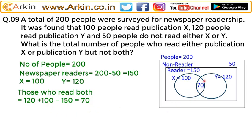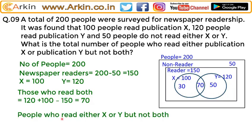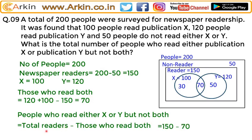The question asks for the total number of people who read either publication X or publication Y but not both. From the total readers of 150, we deduct those reading both newspapers to get the number reading only one newspaper. That will be 150 minus 70 = 80. You can also verify: 30 plus 50 = 80. So 80 is the correct answer.